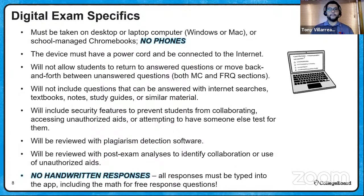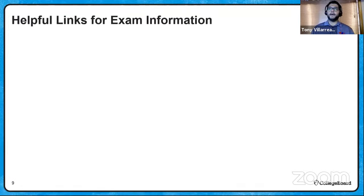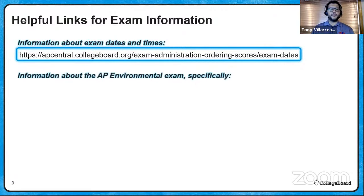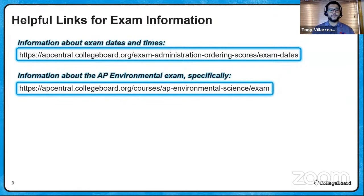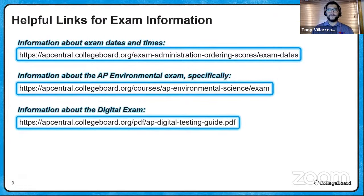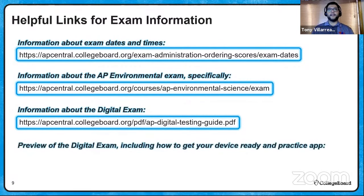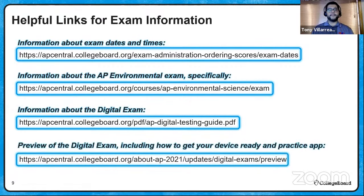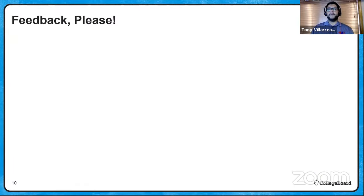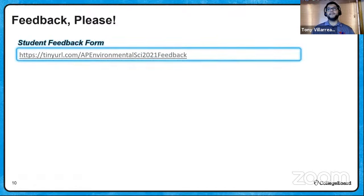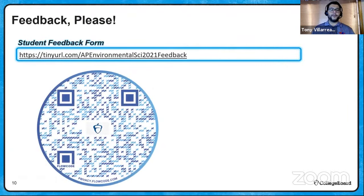Additional digital exam specifics: the exam won't include easily internet-searchable questions and has other security features — read your testing guide. It will be reviewed for plagiarism detection and unauthorized collaboration. There are no handwritten responses — everything including math must be typed in. Check the provided links for exam dates, AP Environmental Science specifics, and the digital testing guide. Download the testing app and practice with its sample questions. This is our last session, so leave feedback for us — the comments will remain open for a day or two.